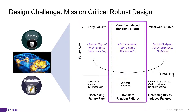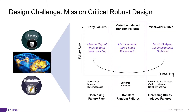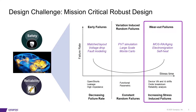The second part is a constant failure rate. This region is usually characterized by variation-induced random failures and can be verified using variation-aware simulation techniques. The third part is an increasing failure rate, known as wear-out failures. This is usually caused by device aging and self-heating effect. This region can be verified by traditional reliability analysis flow with consideration of the MOS RA aging, EM, and self-heating impact.